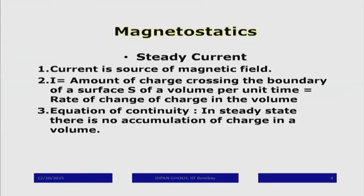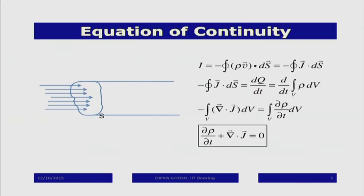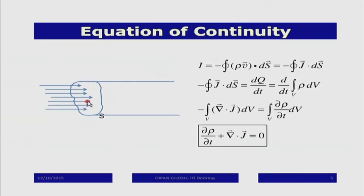In steady state there is no accumulation of charge. Consider a volume bounded by a surface like a current-carrying wire. The electric charges are coming in — traditionally the current direction is taken to be the movement of positive charge, but of course we know that what moves are actually electrons. So the direction of current is actually opposite to the direction in which the negative charges move.